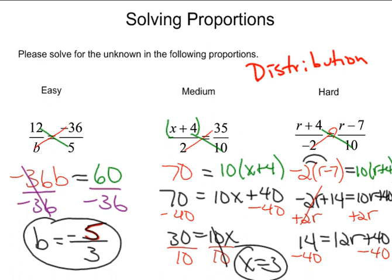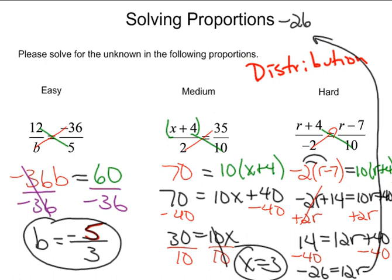We've got just a couple of last steps. We get negative 26 equals 12r. Then to get r by itself, I'll divide both sides by 12. That's going to give me a negative, and 26 over 12 — dividing both by 2 — gives us 13 over 6. So r equals negative 13/6. These answers can be checked on your calculator by using the store button, and you will see that they yield true statements.